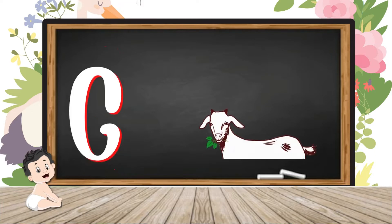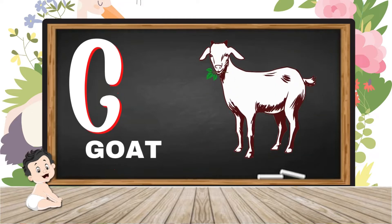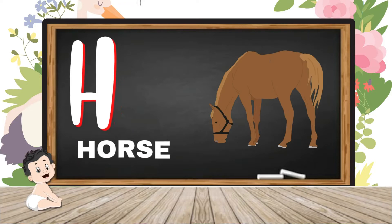G for goat, goat means buckri. H for horse, horse means gora.